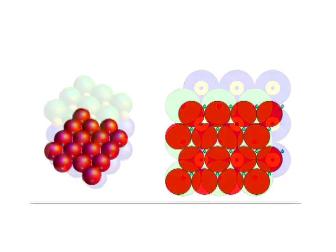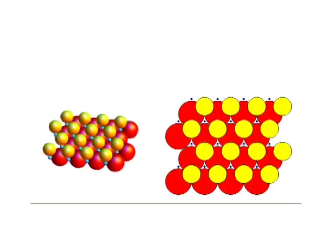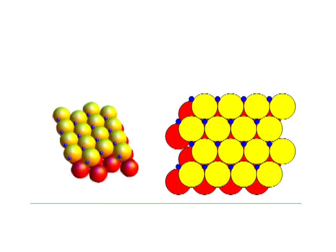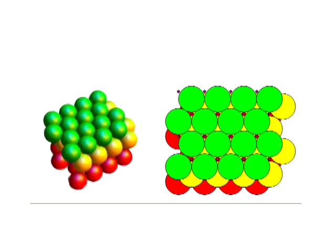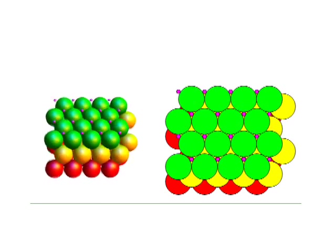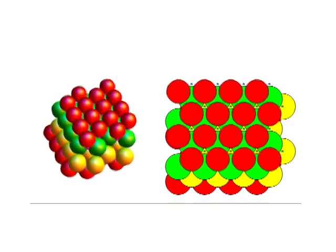Tetrahedral ionic solids occur in close-packed array structures, and when the ion ratio is between 0.224 and 0.414.